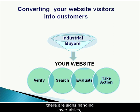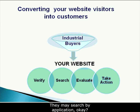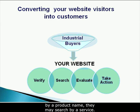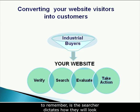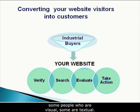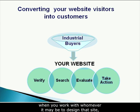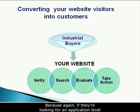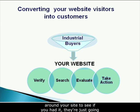Once they know they're in the right place, the next question is: do you have what I'm looking for? This is where navigation and the ability to find what they want becomes absolutely crucial. They might search by application, by part number, by product name, or by service. The searcher dictates how they will look for the information — one size fits all will absolutely not work. Some people are visual, some are textual. You need to address the various ways someone may search for your information, because if they're looking at an application level and don't see it, they'll just hit that back button.